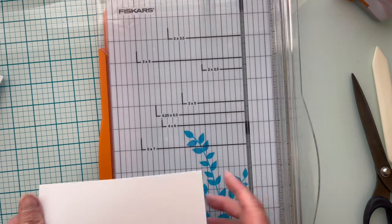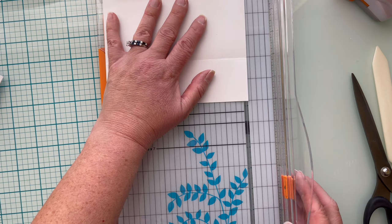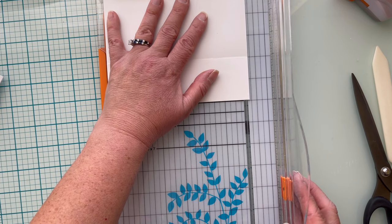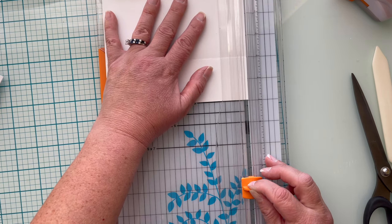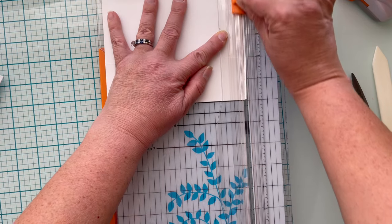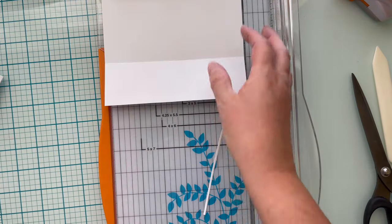So we're going to bring the trimmer back in and we're going to slice off just a sliver on one side. It doesn't matter which side but you want it to be on the five inch side, either left or right.